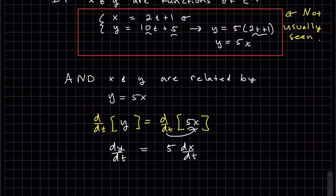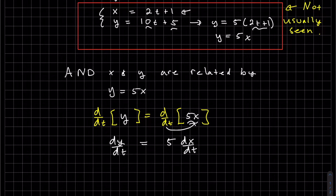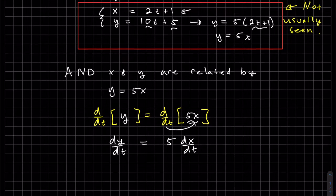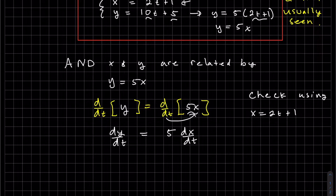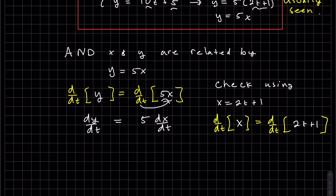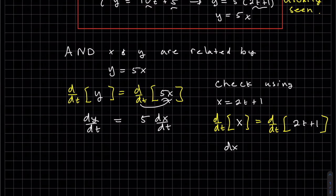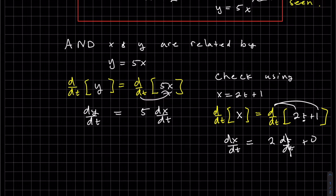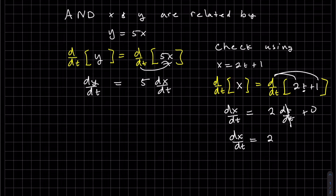Since we have the equations in front of us, let's go ahead and check it out to make sure it works. We're going to take these two equations and take the derivative with respect to t of both sides. The derivative of x in terms of t is dx/dt. When we take the derivative of 2t in terms of t, it's just 2 — dt/dt cancels. The derivative of a constant is 0, so we get dx/dt equals 2. We can plug dx/dt equals 2 there, the 5 is already there, and we get 10 on the right-hand side.